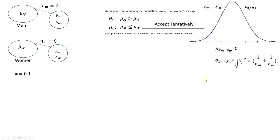The average of these sample differences should be zero if there is no difference between the two populations. Also, the standard deviation of the difference between the mean of a sample from men and the mean of a sample from women — if we repeatedly do it — is given by this formula, which at first looks complicated, but once we understand what sp squared is, we'll see that it is not.